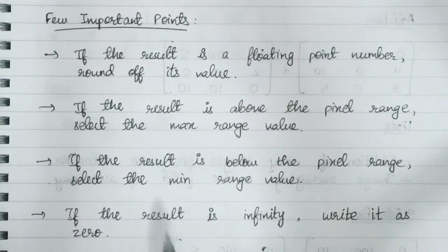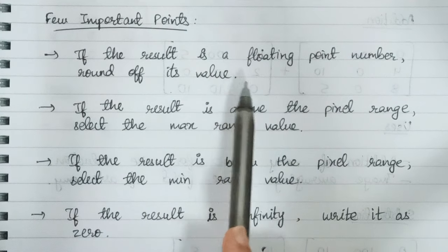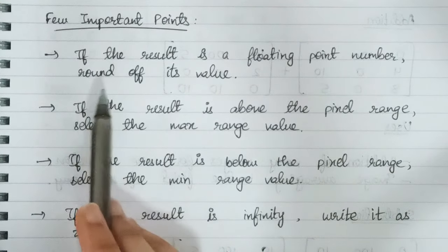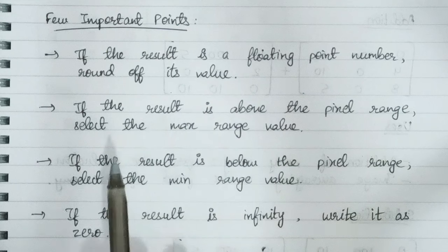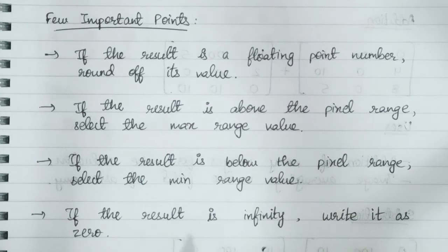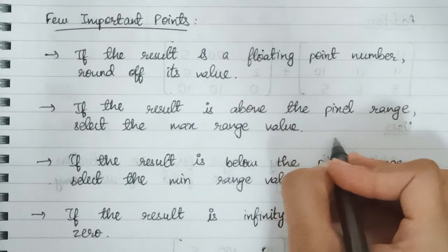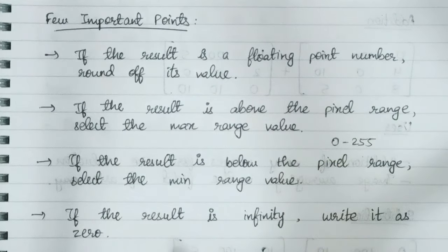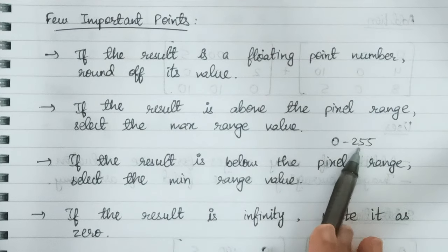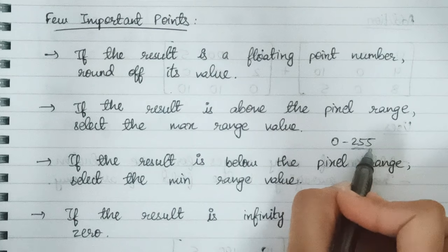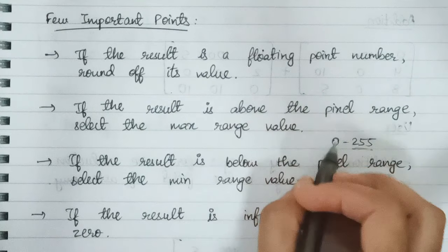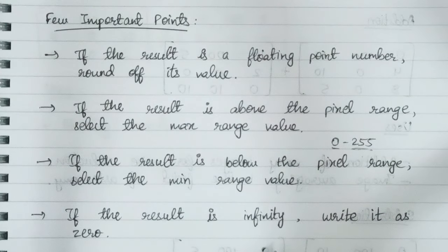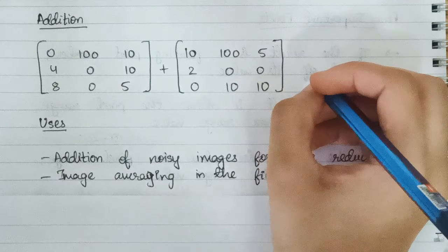Before we move ahead with the examples, there are a few important points to note. First, if we get a result which is a floating point number, we need to round off its value. Second, if the result is above the pixel range, we select the maximum range value — usually 255 for an 8-bit grayscale image. If the result is below the range, we select the minimum value, which is 0. If the result is infinity, we take the answer as 0.